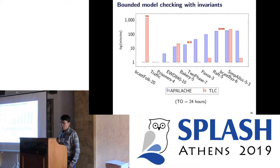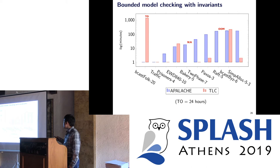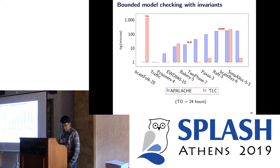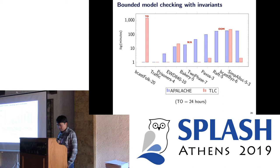The second experiment is about bounded model checking with invariants. In this experiment there is no clear winner. In some benchmarks our model checker is better — TLC times out or runs out of memory — but in other cases TLC is better than our model checker. The timeout for this experiment was set to 24 hours.